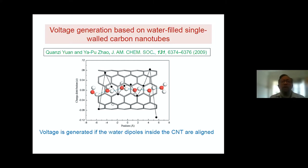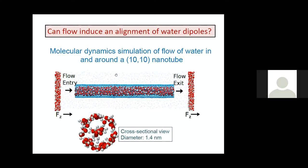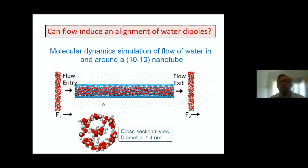Combining these two ideas: when there is alignment there is voltage generated, and if flow itself produces alignment, then that could be a possible mechanism for the generation of the voltage. That is basically the problem that we want to study. The question is: can flow induce development of dipole alignment? In the simulations, we basically place a nanotube in a bath of water.